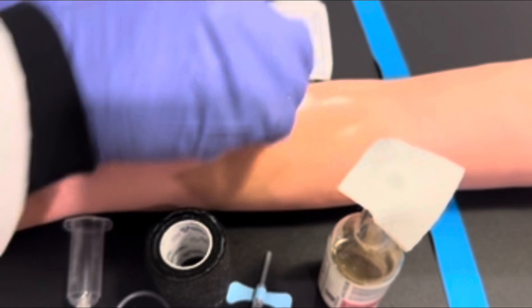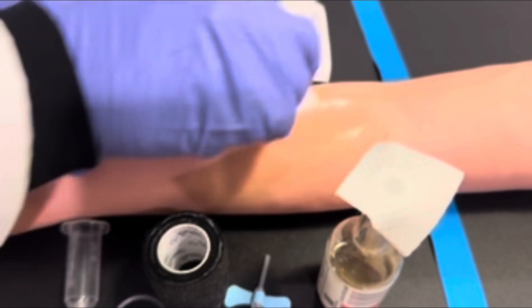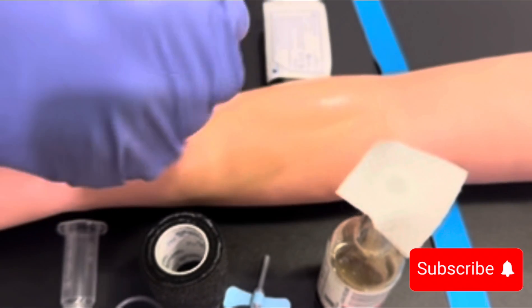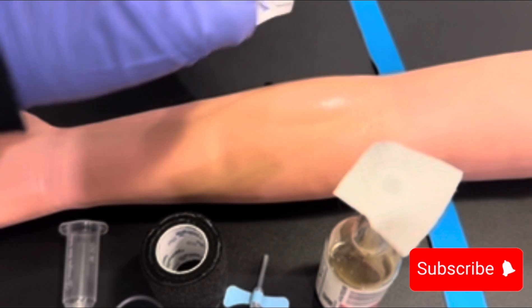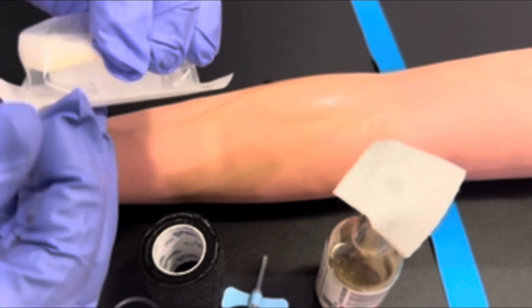The first antiseptic that we will use is 70% alcohol. Please clean the site for 20 seconds using 70% alcohol in concentric circles. And then we will use chlorhexidine.